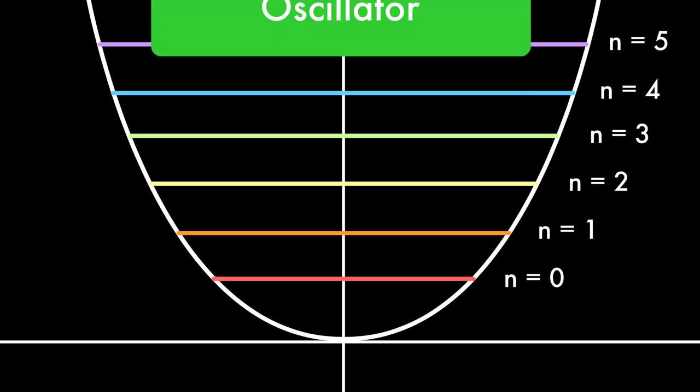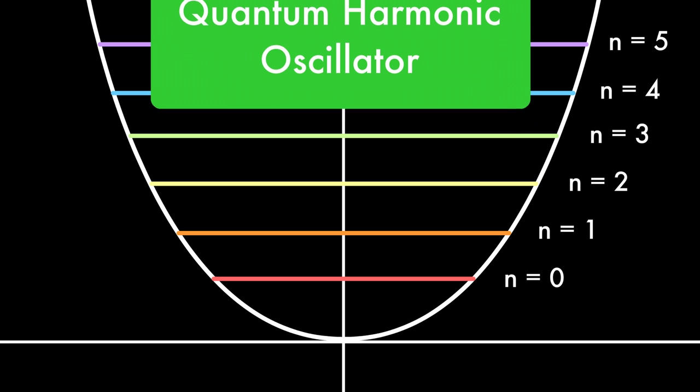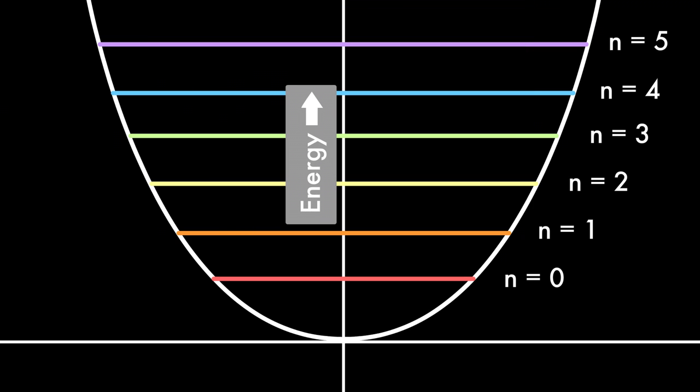Let's look at what's called a quantum harmonic oscillator. Don't be discouraged by the name. It's just a graph that shows possible energy levels of the vacuum energy described earlier. Every escalating n adds an extremely small amount of energy to the vacuum called a quantum.